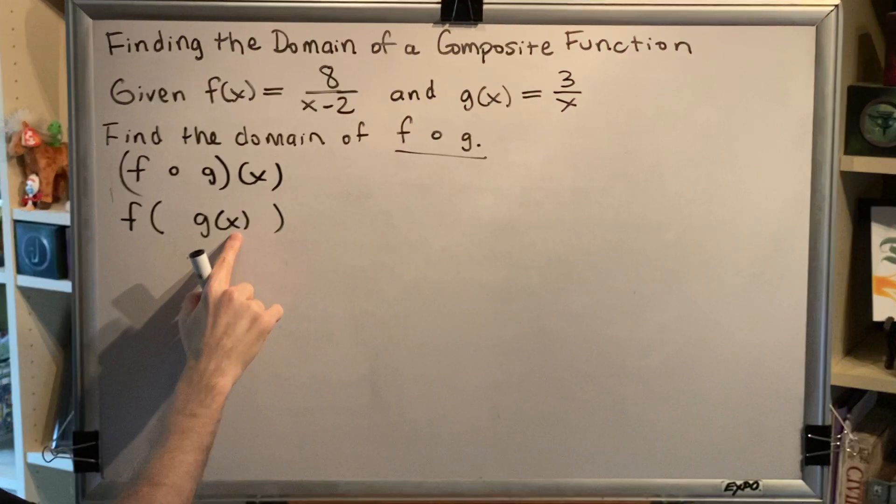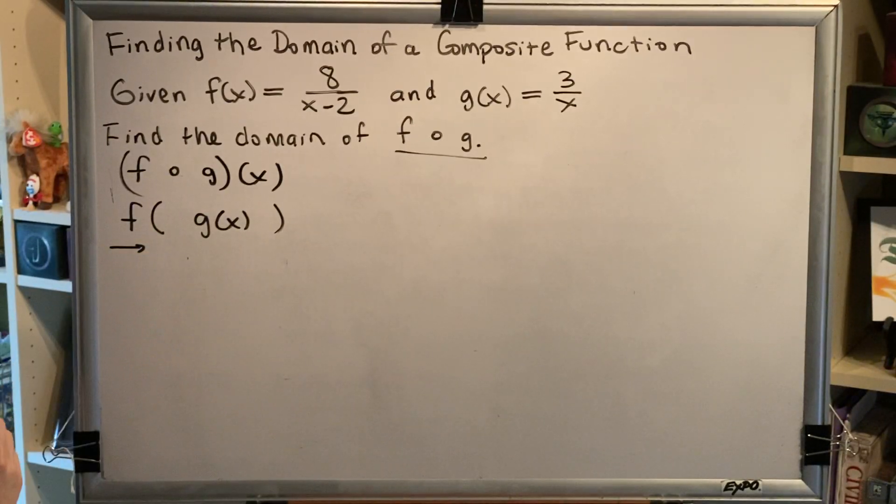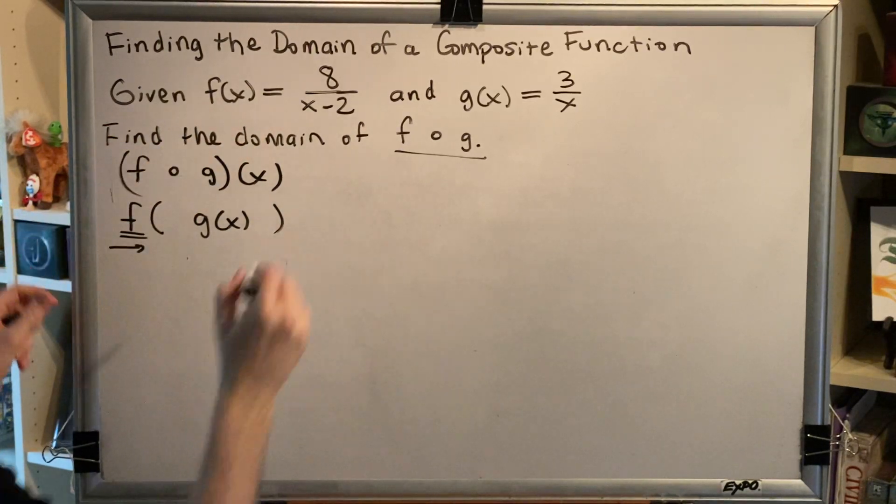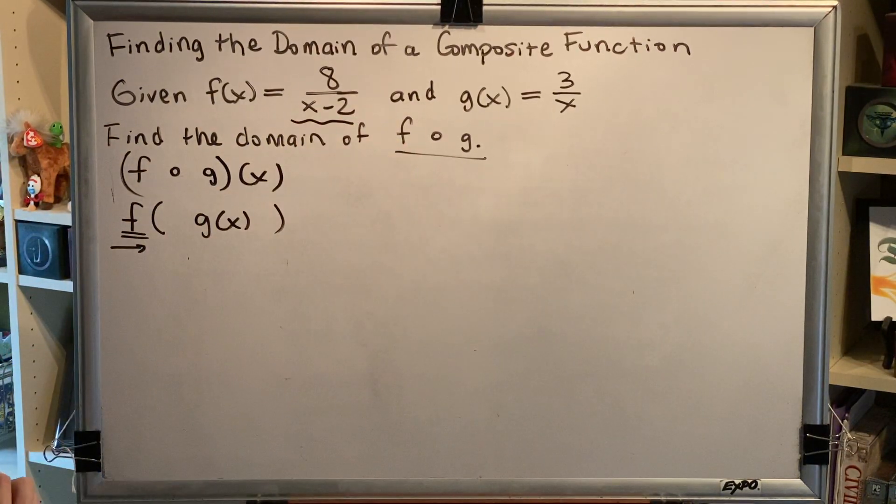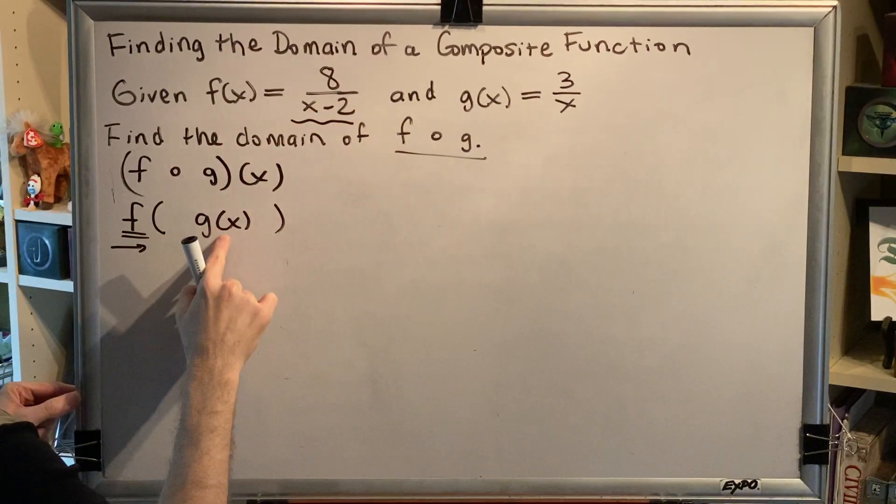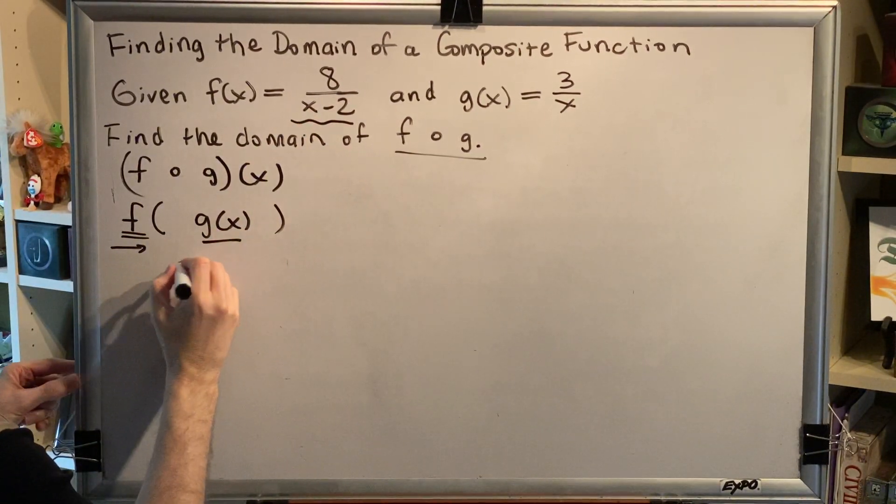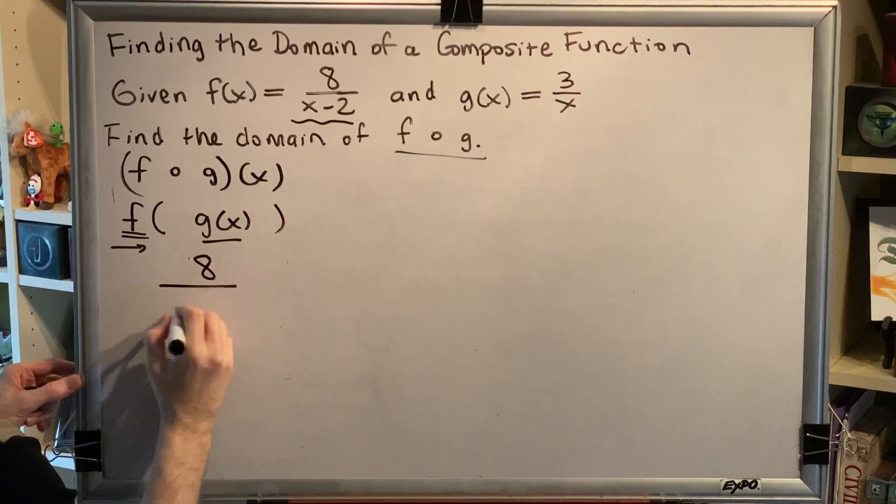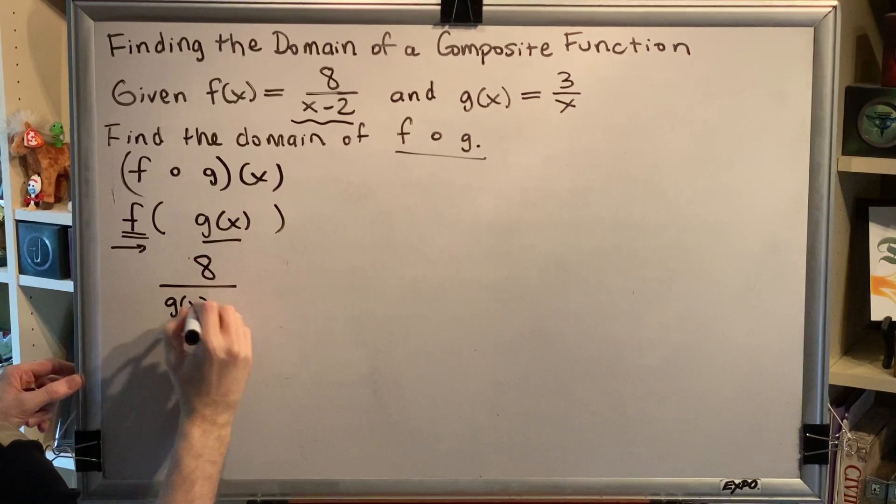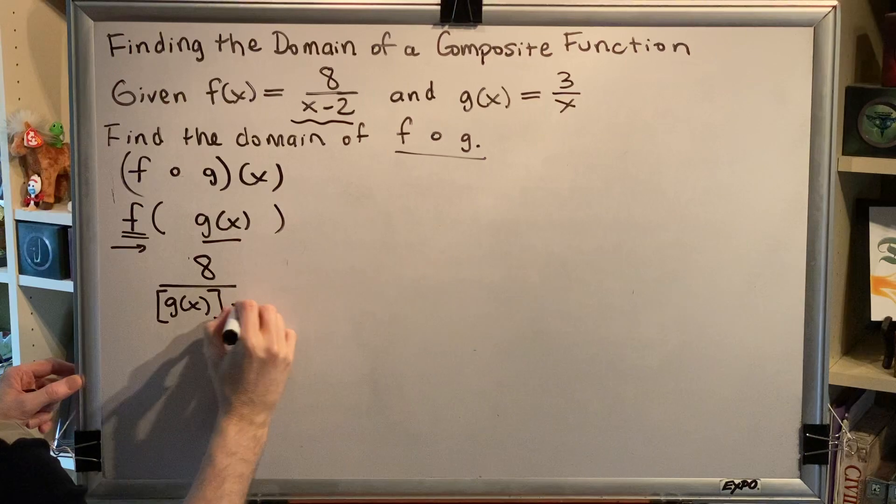In the innermost parentheses, we have a variable, so we work from the outside in, which means we're going to use function f, and specifically the right side of function f, to write our next line of algebra. But instead of x, we're going to put g of x. So we get 8 over g of x minus 2.